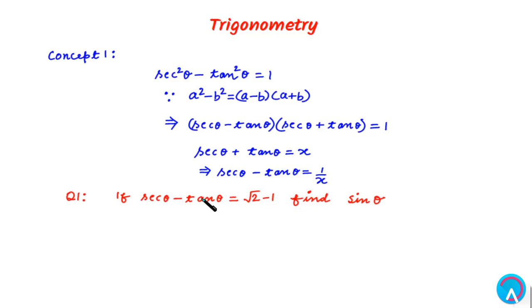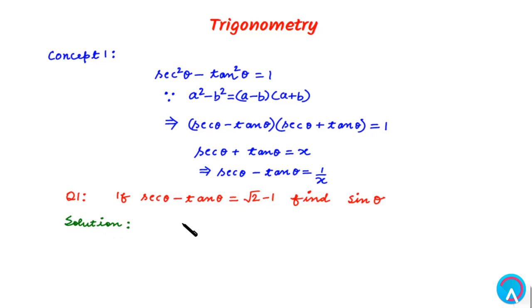In question number 1, we are given that secθ - tanθ = √2 - 1, and we need to find the value of sinθ. As we have already discussed, if secθ + tanθ = x, then secθ - tanθ = 1/x.